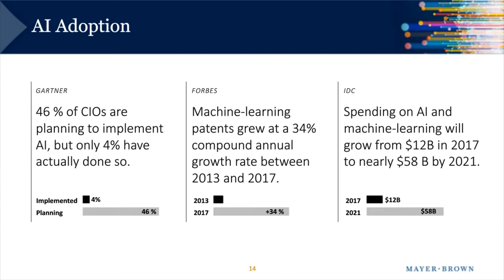Several sources show the potential growth of AI adoption: Gartner predicts that 46% of CIOs are going to implement AI, but only 4% have actually done so thus far. Forbes shows that machine learning patents grew at a 34% compound annual growth rate over the last five years. And IDC predicts that spending on AI and machine learning will grow from $12 billion to nearly $58 billion in 2021. This is coming at all of us at a much faster rate of adoption and growth than anticipated a couple of years ago.